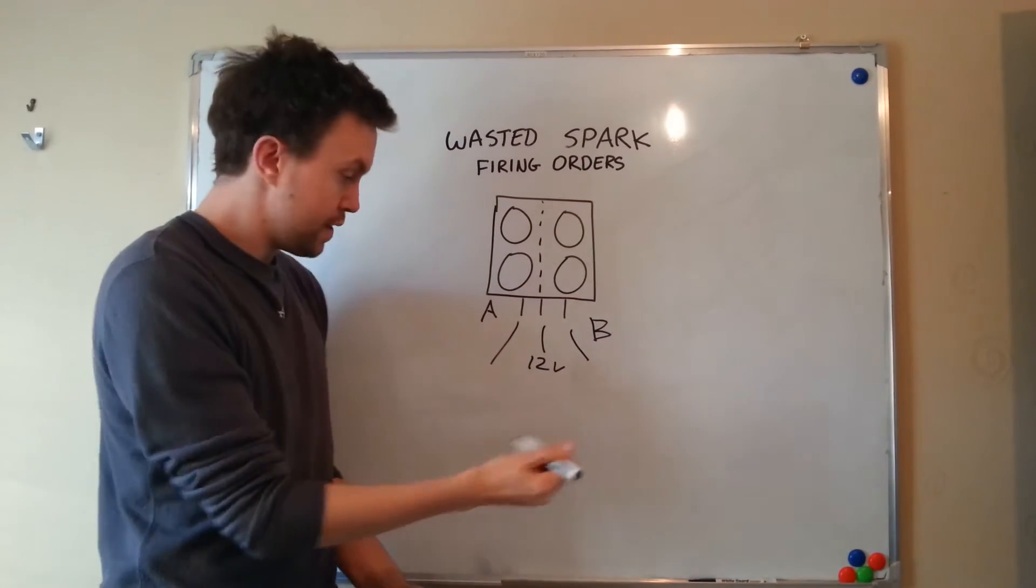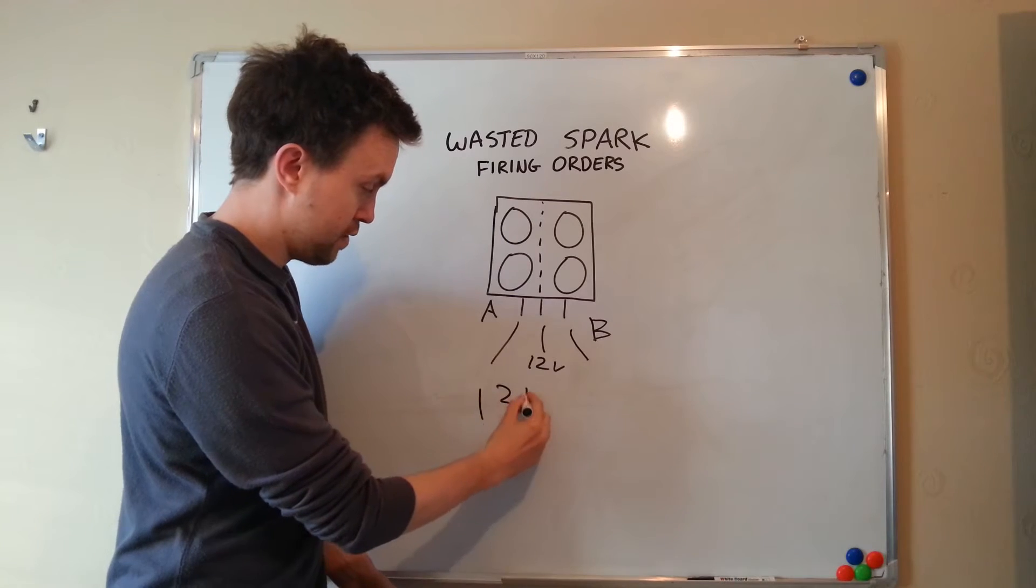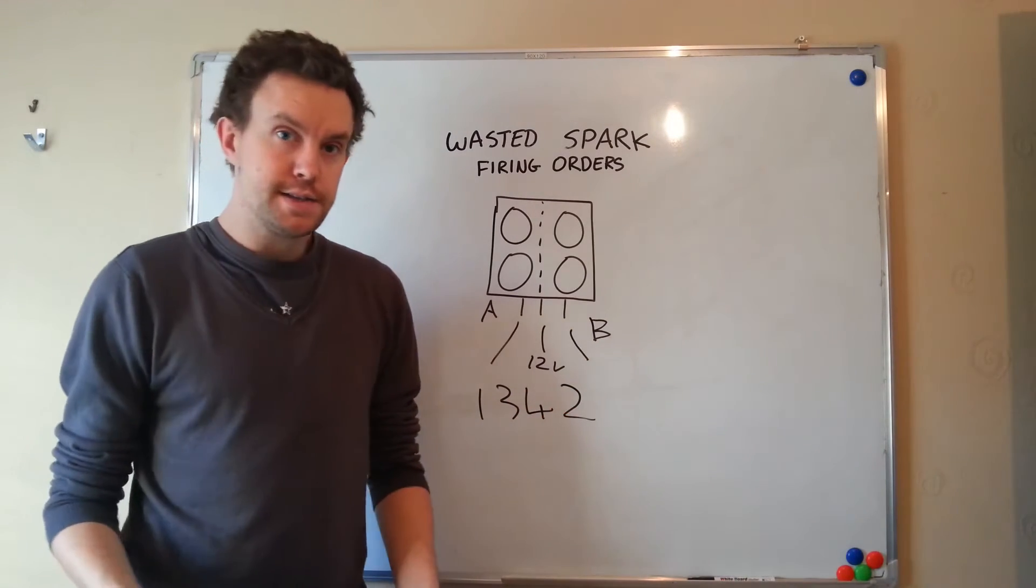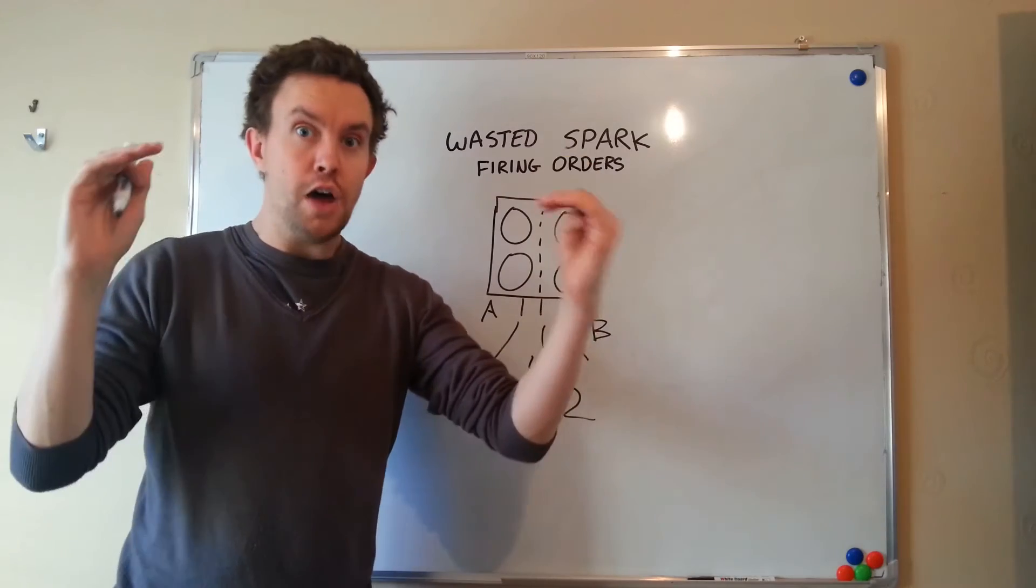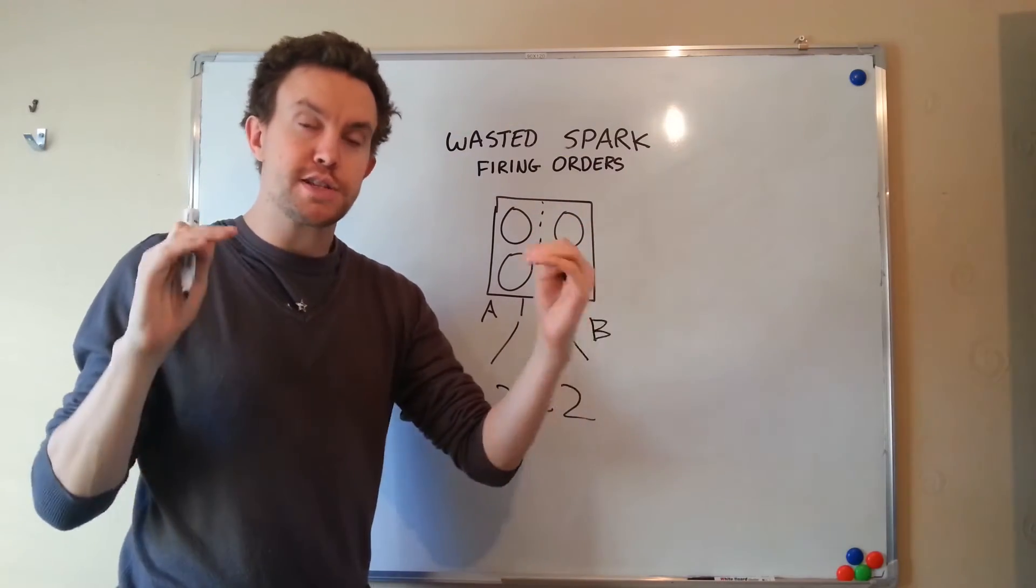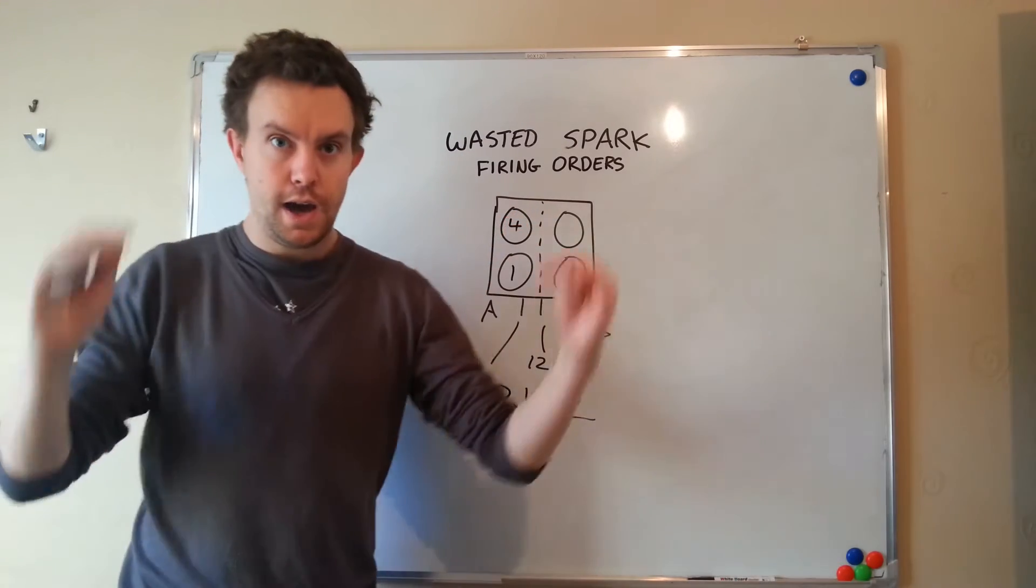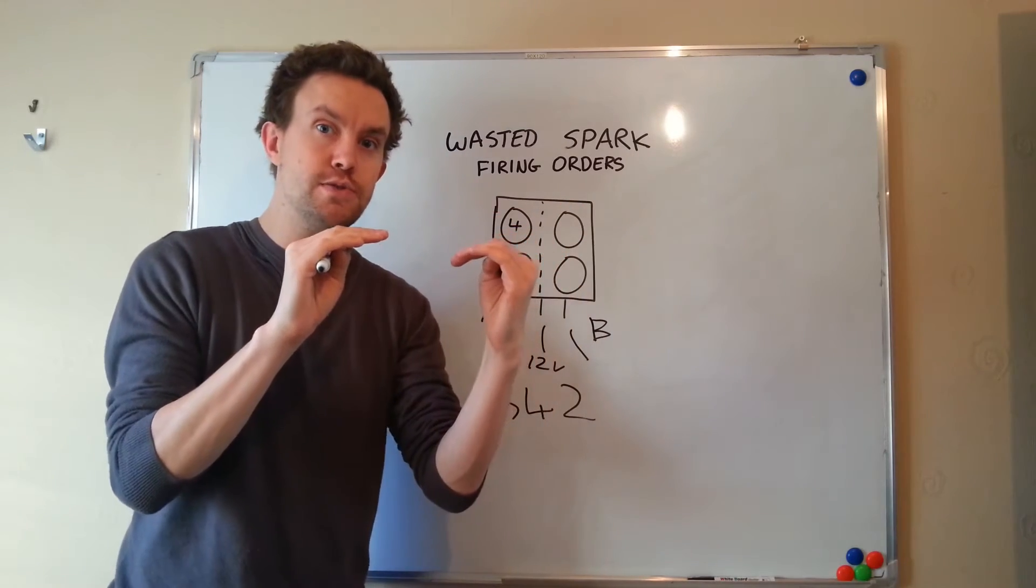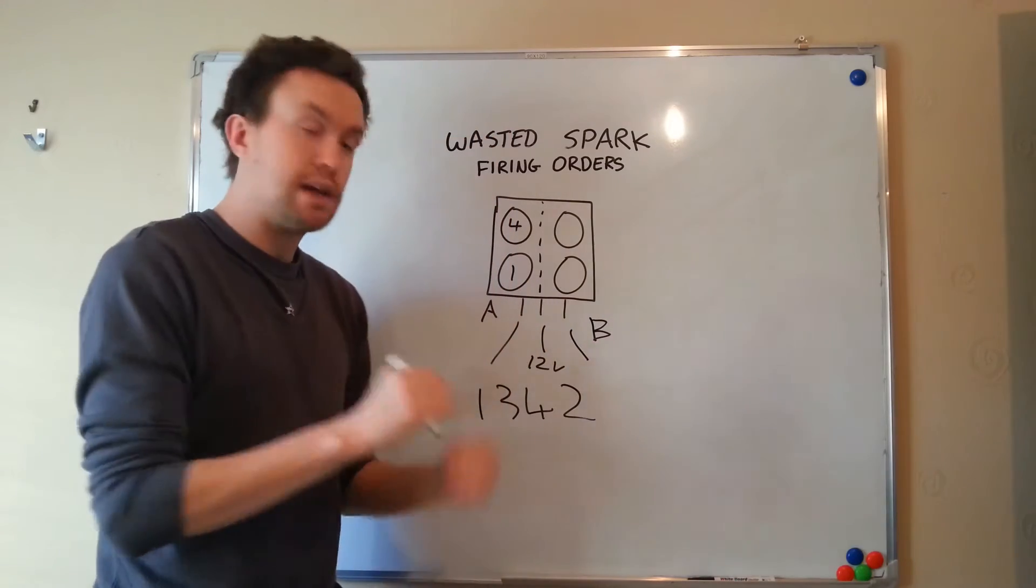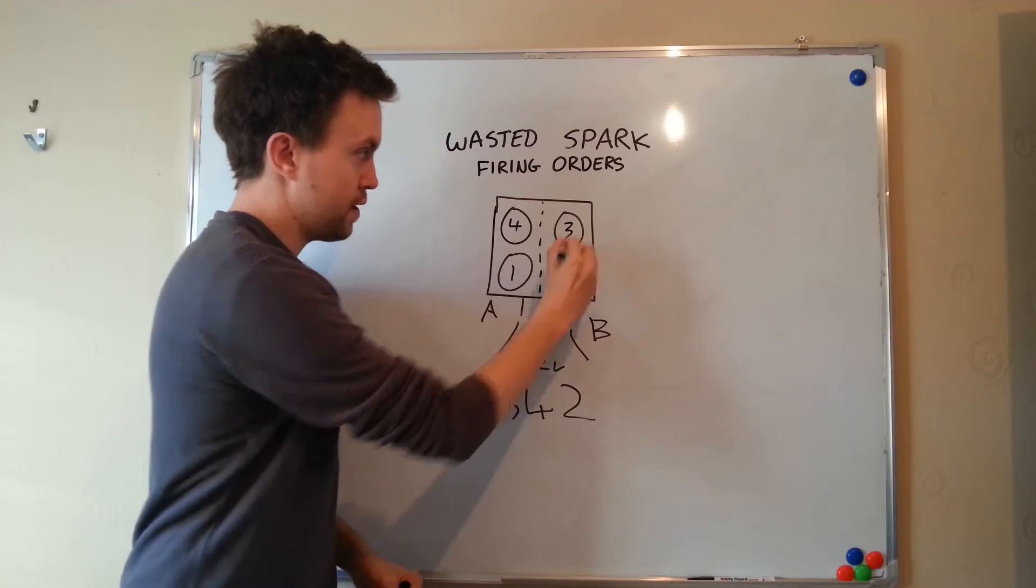So what we can do is write down our firing order of the engine. For example, one, three, four, two. And we know that one and four are up the top together on this engine. So one and four up the top together means one and four need a spark together. So let's give this one one and four. And then the inside two pistons of the engine, two and three, are up together. So we need to give them a spark at the same time. So we'll call these cylinders two and three.